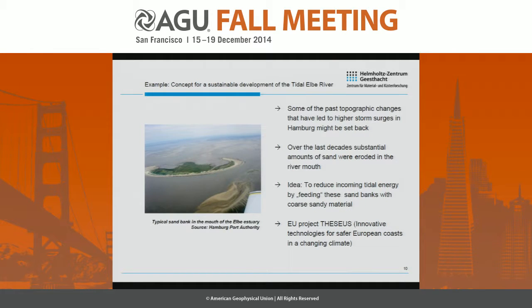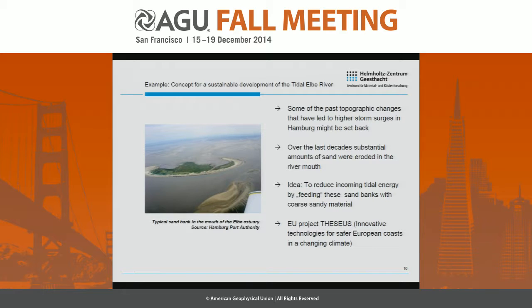When it comes to adaptation, one has to discuss the concept for the sustainable development of the Tidal River Elbe put forward by the Hamburg Port Authority. Within this concept, two ideas are outlined that could reduce storm surge peaks in Hamburg St. Pauli. One idea is to set back some of the topographic changes that led to higher storm surges. A typical sandbank in the River Elbe had substantial amounts of sand eroded over the last decades. The idea is to reduce the incoming tidal energy by feeding these sandbanks with coarse sandy material.